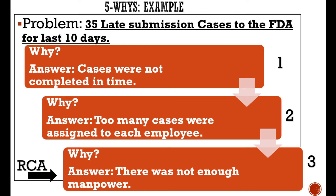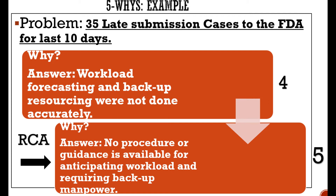Starting from the absence of a procedure and guidance for anticipating workload and acquiring backup manpower — which led to poor or no workload forecasting and backup resourcing — which led to a lack of manpower — which led to assigning too many cases to each individual — which ultimately led to cases not being completed in time and submissions being late. And now that we know the actual root cause, it will be easy to plan and execute corrections, corrective actions, and preventive actions.